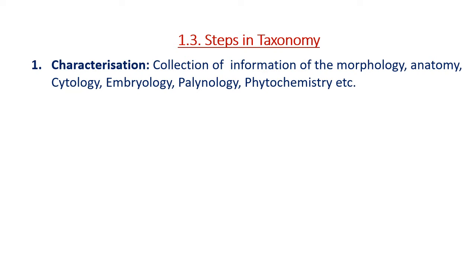Now the steps in taxonomy. The first step is characterization — the collection of information from fields like morphology, anatomy, cytology, embryology, phytochemistry, and other branches of botany.